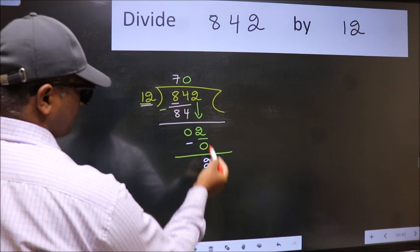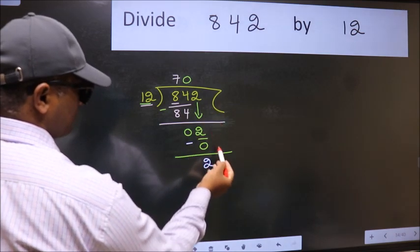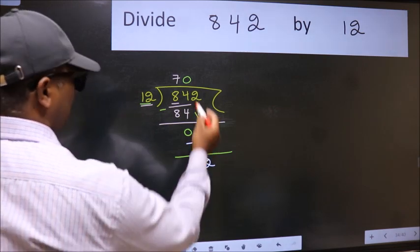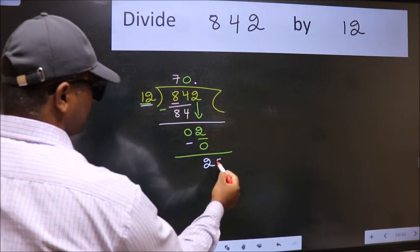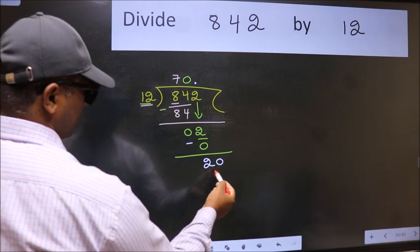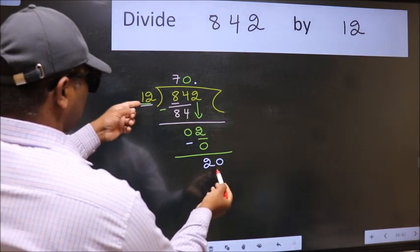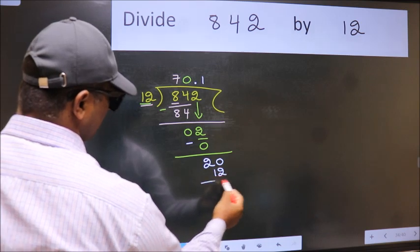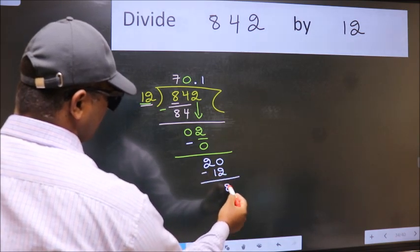Over here, we did not bring any number down and 2 is smaller than 12. So, now we can put dot and take 0. So, 20. A number close to 20 in 12 table is 12 once 12. Now, we subtract. We get 8.